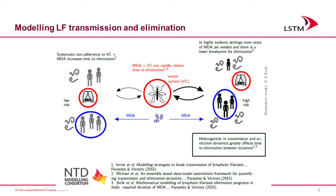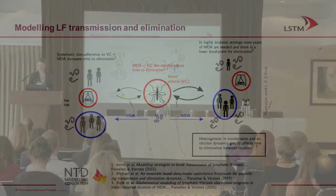The first result is that systematic non-adherence to MDA, either year after year or between MDA and LLIN use, is going to significantly increase the time to elimination. The second point is that vector control, when used in combination with MDA, can have big effects on elimination and may be the only approach in areas with high endemicity. The third point is that heterogeneous transmission dynamics can also greatly influence the time to elimination.